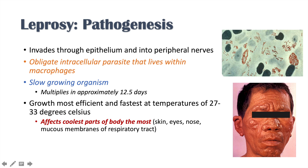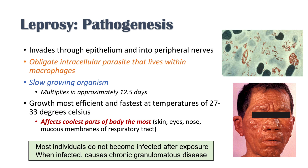As seen in this image, this individual has nodules on their eyebrows, cheeks, chin, and ears — anywhere that's exposed and at its coolest, including the nose. Most individuals do not become infected after exposure, but when they do, it causes a chronic granulomatous disease, usually requiring prolonged close contact.